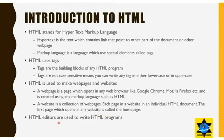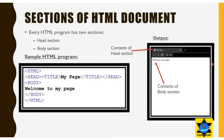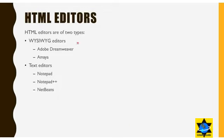HTML editors are used to write HTML programs. Every HTML program has two sections: the head section and the body section. In a sample HTML program, the title of the page is displayed in the title bar of the browser, while the contents written in the body section are displayed in the main part of the web browser.